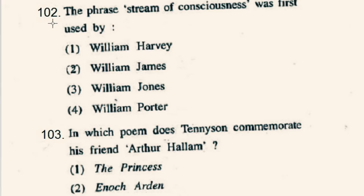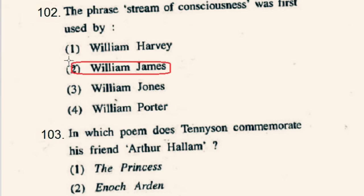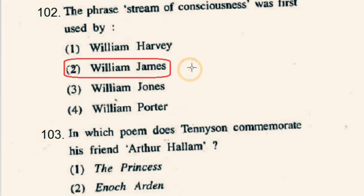Question number 102: The phrase 'stream of consciousness' was first used in 1890 by whom? It was first used by William James in his book Principles of Psychology. So option 2nd, William James, will be the correct option.